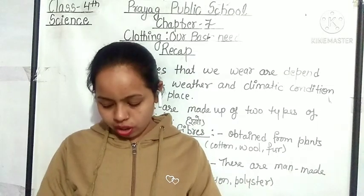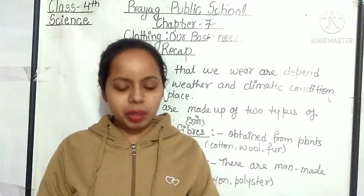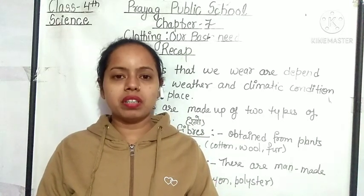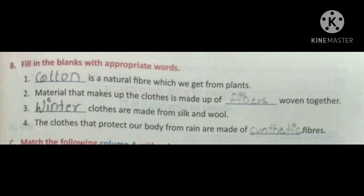Now let's proceed to page number 69, Exercise B — Fill in the blanks with appropriate words. Cotton is a natural fiber which we get from plants. Materials that make up clothes are made of fibers woven together. Winter clothes are made from silk and wool. The clothes that protect our body from rain are made of synthetic fibers.